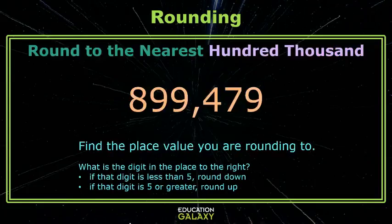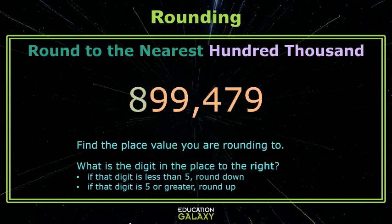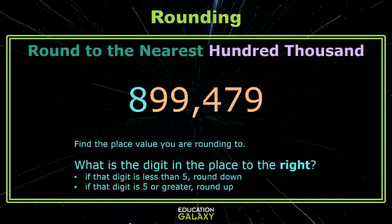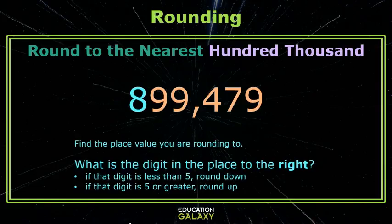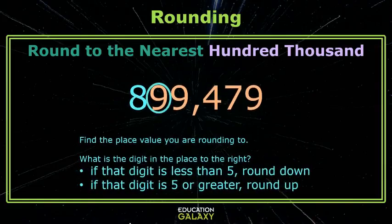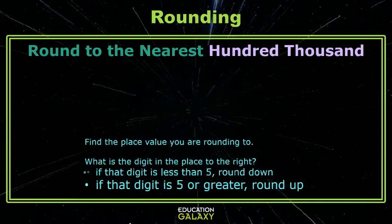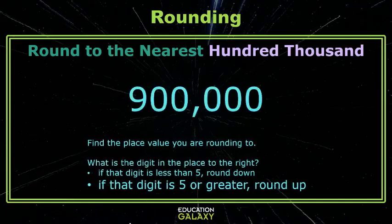One more. Here we're going to round to the nearest hundred thousand. Which digit's in our hundred thousand place? It is the 8. Checking the digit to the right, it's a 9, and that value is 5 or greater. So we're going to round up to the next hundred thousand. In our case, that is 900,000.